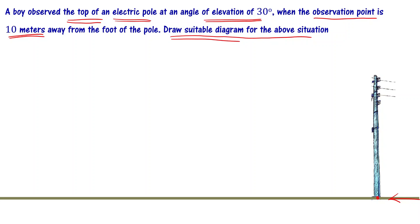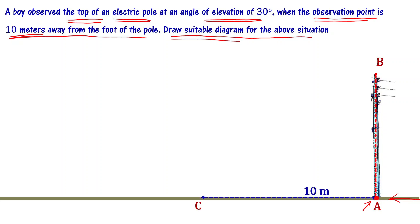Draw a line connecting the foot and the top and label it line AB, where AB represents the height of the pole. A is the foot of the electric pole. Now mark the observation point 10 meters away from the foot of the pole.